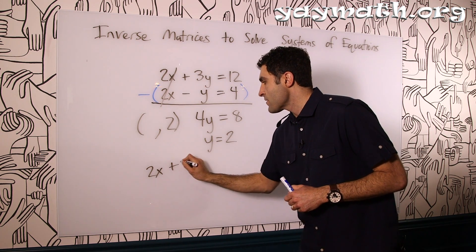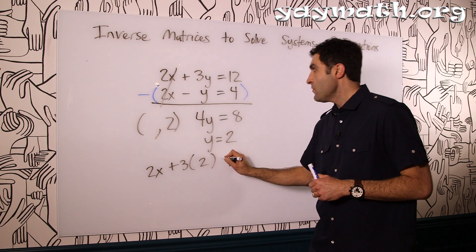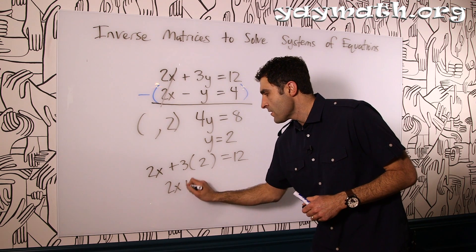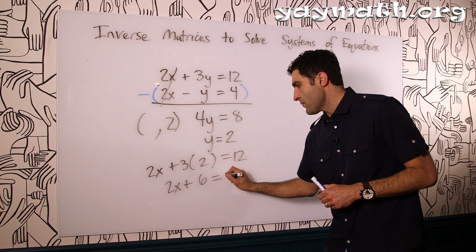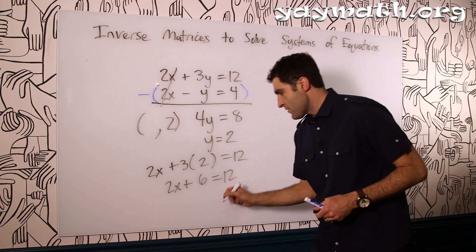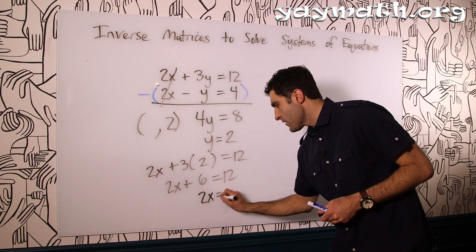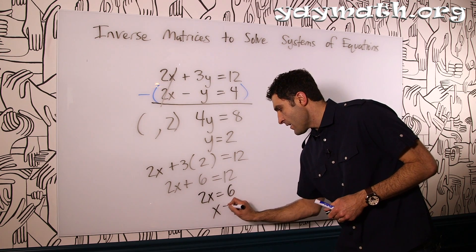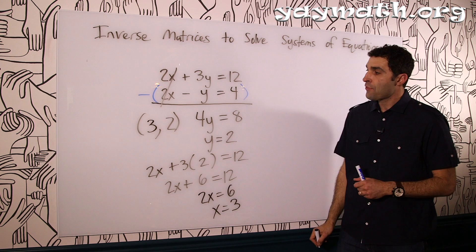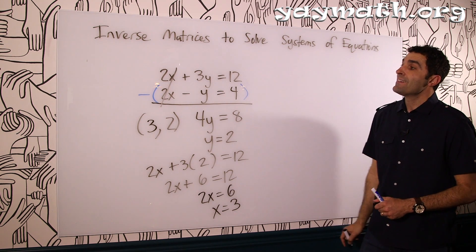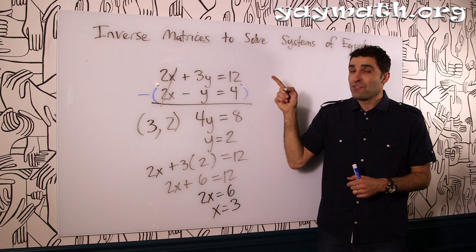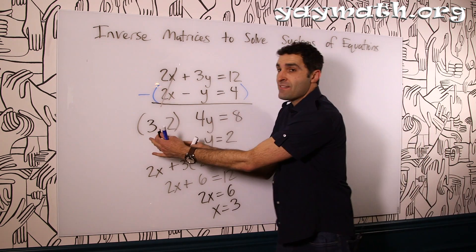So we can get like 2x plus 3 times 2 equals 12, and then we get 2x plus 6 equals 12. Let's actually switch this marker here, so that works. And then 2x equals 6, and x equals 3. So this definitely crosses at (3, 2), these two lines.